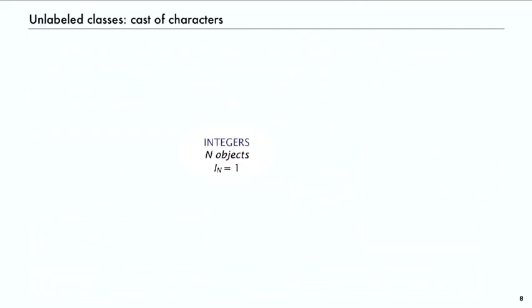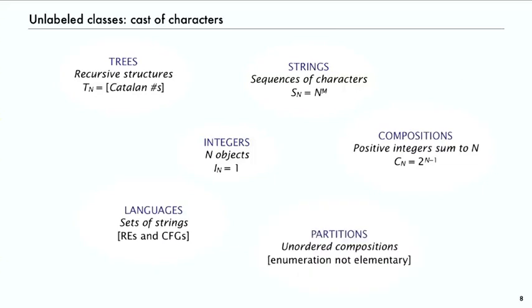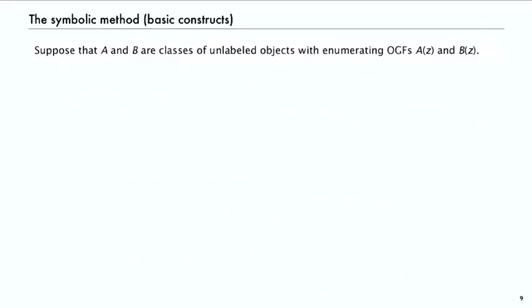There's a number of basic combinatorial objects that are characterized well by ordinary generating functions. They're called unlabeled classes. We'll talk about that distinction later. Integers or strings, which are sequences of characters, or recursive structures like trees and languages. Then compositions and partitions, which are compositions of positive integers that sum to n. Partitions are unordered compositions. We'll look at all of those soon.